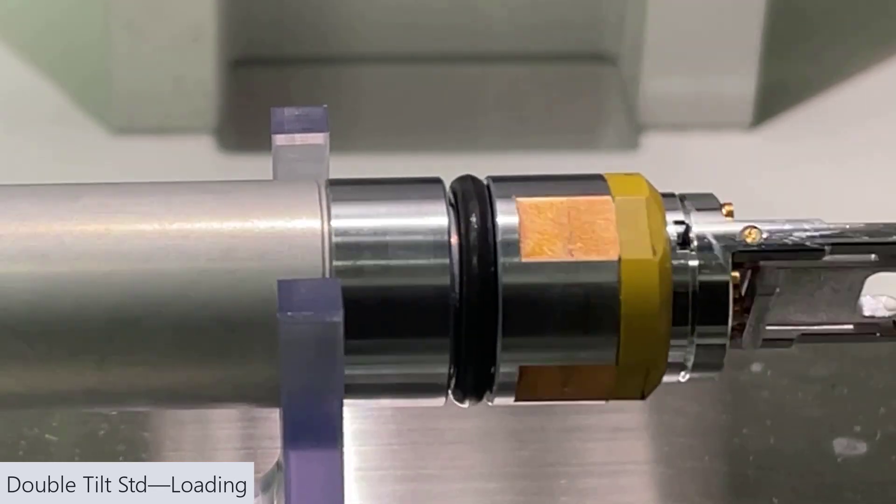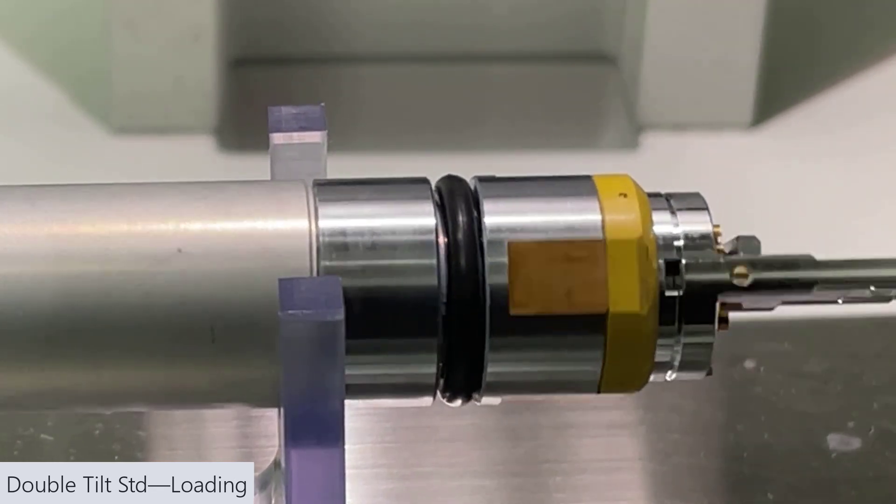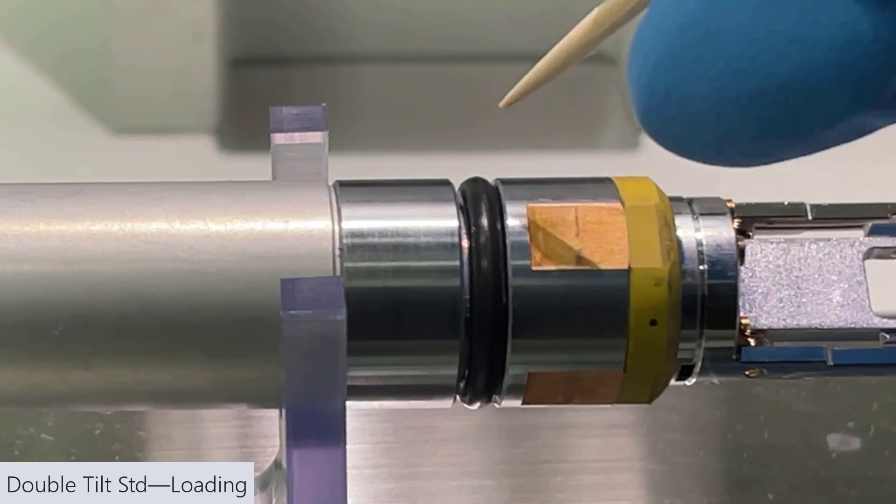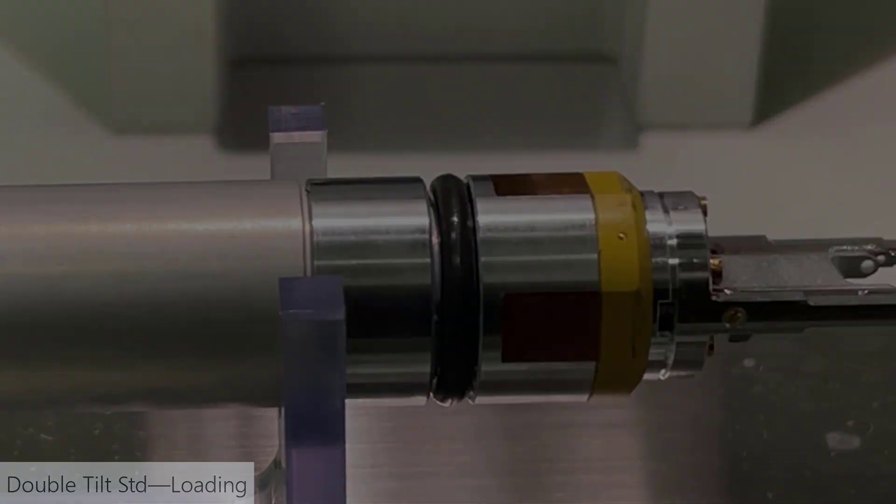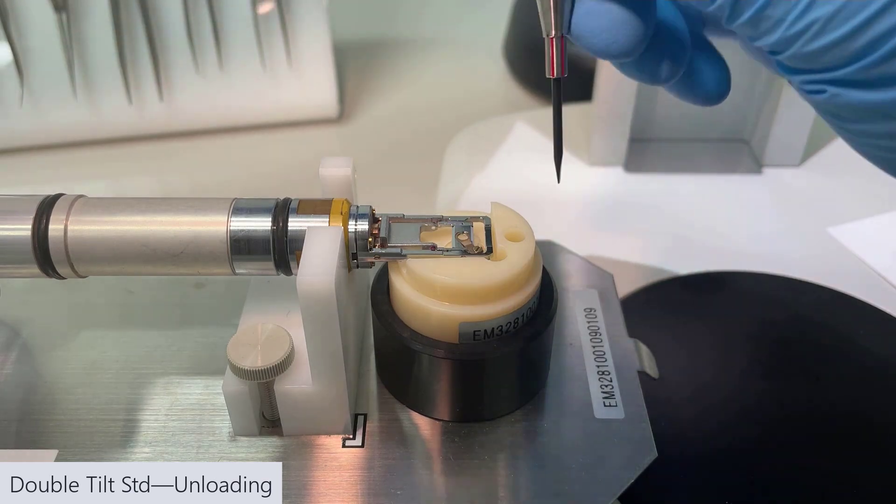Again, we want to check the innermost O-ring for any lint or hair and remove it with a toothpick. Once we're done,